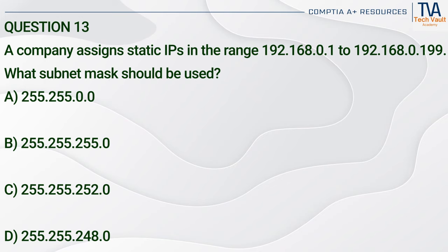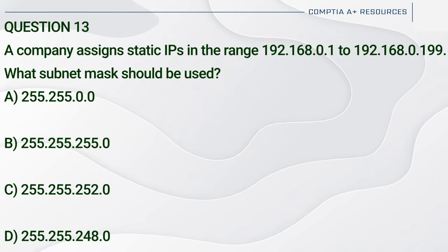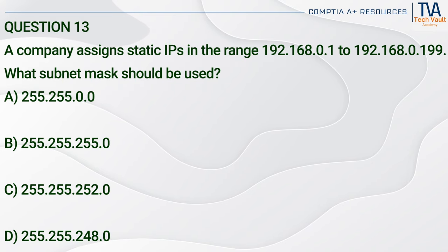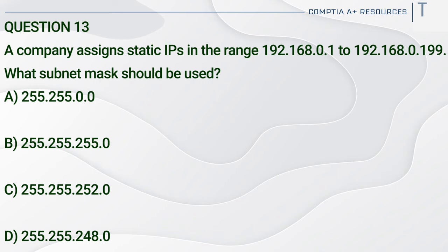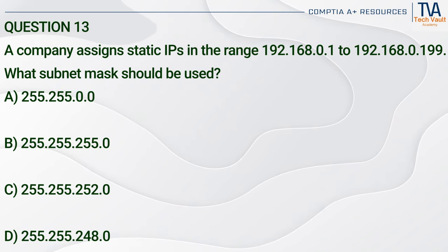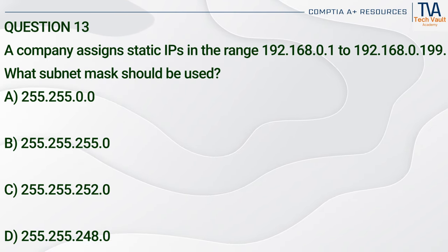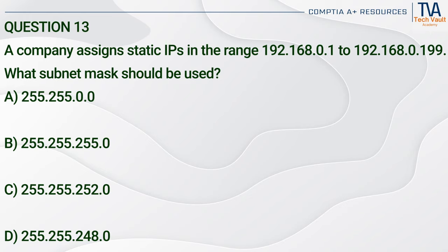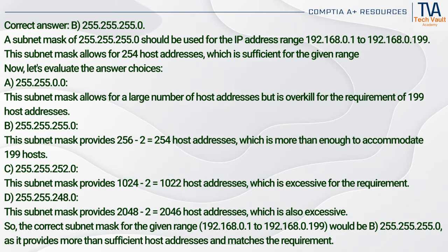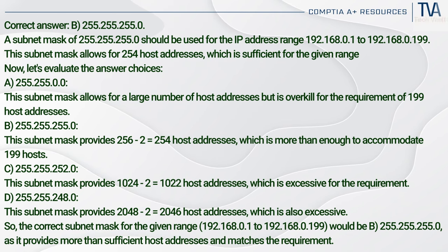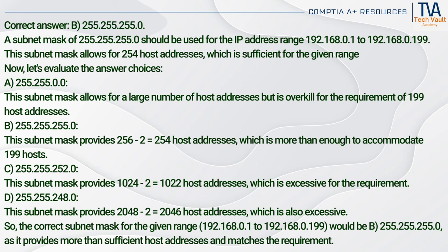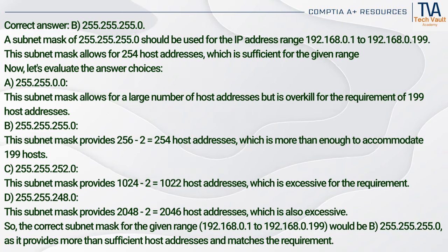Question 13. A company assigns static IPs in the range 192.168.0.1 to 192.168.0.199. What subnet mask should be used? A. 255.255.0.0. B. 255.255.255.0. C. 255.255.252.0. D. 255.255.248.0.